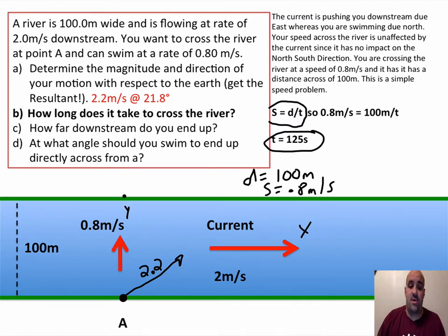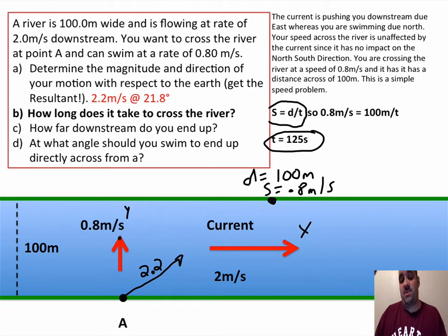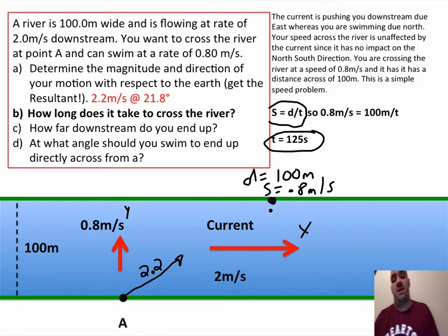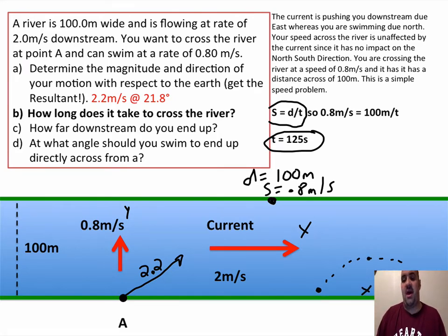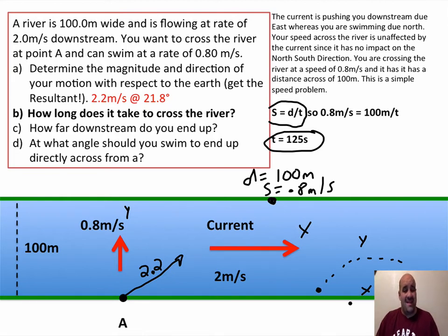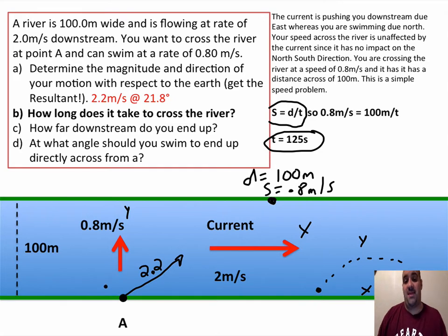Note that you won't be directly across — it takes 125 seconds to reach the other side, but you'll be downstream somewhere, because while swimming across at 0.8 m/s you're simultaneously being pulled downstream at 2 m/s. One of the hardest concepts to grasp is that even though there's a resultant vector, you can treat your X and Y motion separately and individually. This will also apply when we launch a ball — we'll look at horizontal speed and vertical motion independently, and it will make solving kinematics problems much easier.